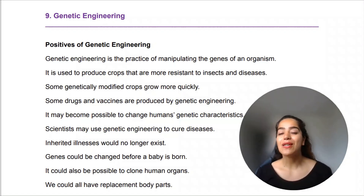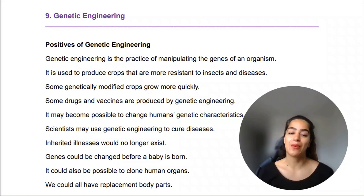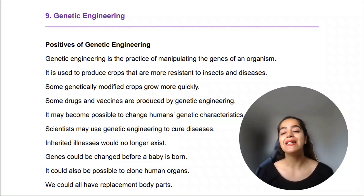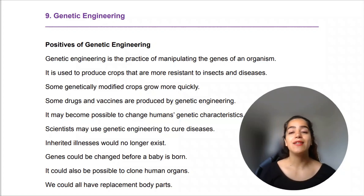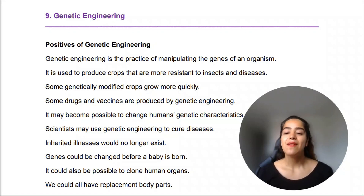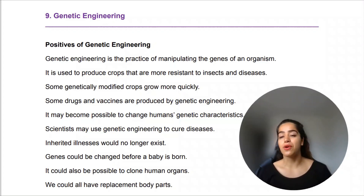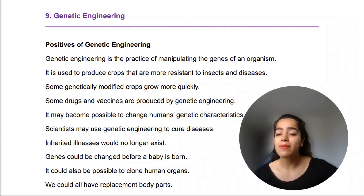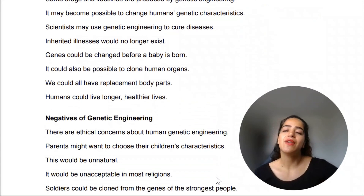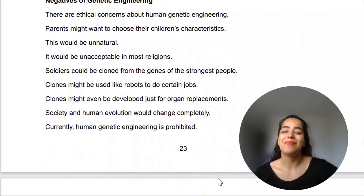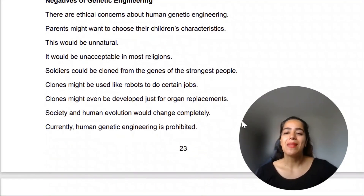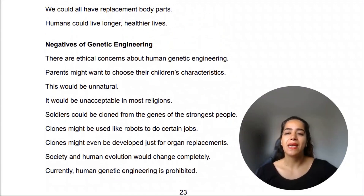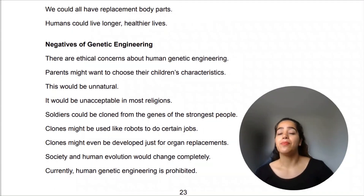Cloning human organs means you can produce and create human organs as if they are real. We could all have replacement body parts — so if something is wrong with one of your organs, you can have a spare. That is very scary, but very cool at the same time.